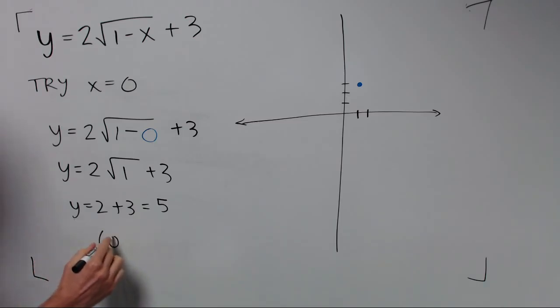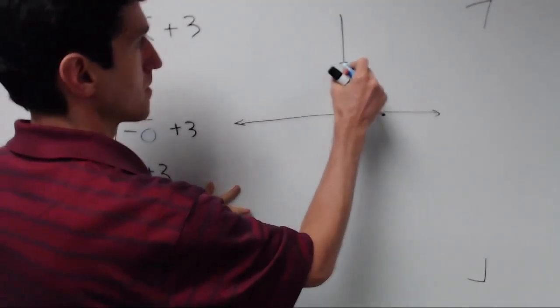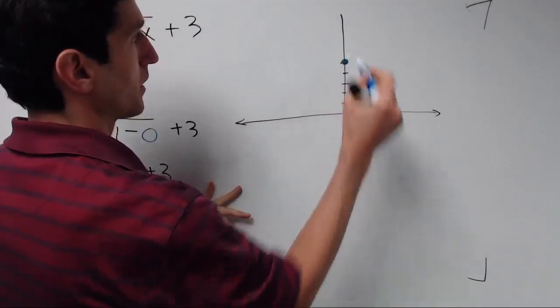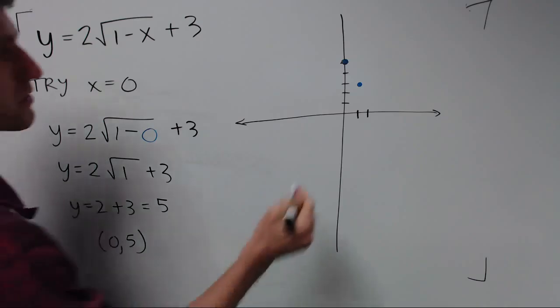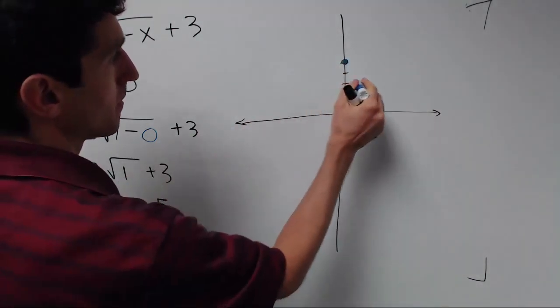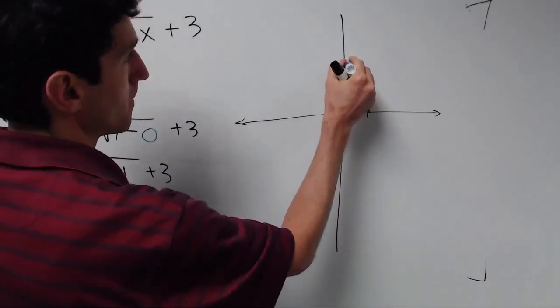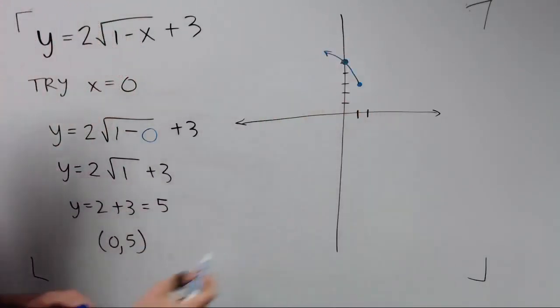So our second point is 0, 5. Go ahead and put that on the graph. And we need a third point. So we know it's going off to the left here, right? So we know it's headed in that direction and we just need a third point.